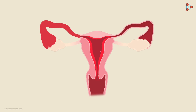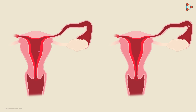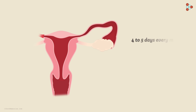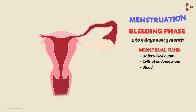If fertilization does not occur, the ovum exits the body through the vagina, and the endometrium also collapses and exits through the vagina. As a result, for almost 4 to 5 days every month, a female experiences a bleeding phase. The bleeding through the vagina contains the unfertilized ovum, the cells of the endometrium, and blood. This is called the menstrual fluid, and the process is referred to as menstruation.